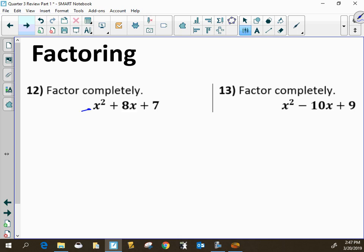So here, factoring where a is 1, what we're looking for are two numbers whose product is 7 and whose sum is 8. And those two numbers are 7 and 1. Same thing here. We're looking for two numbers whose product is 9 but whose sum is negative 10. So those two numbers are negative 9 and negative 1. And we can take that shortcut as long as a is 1.